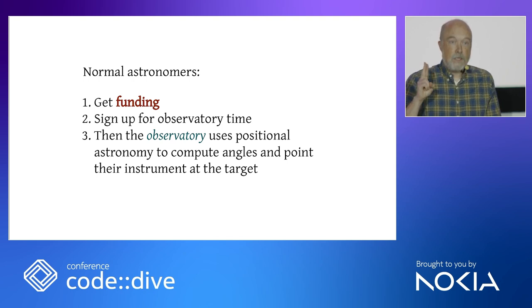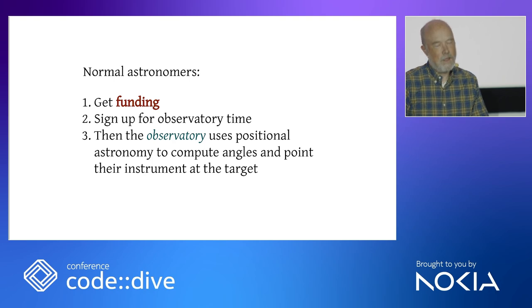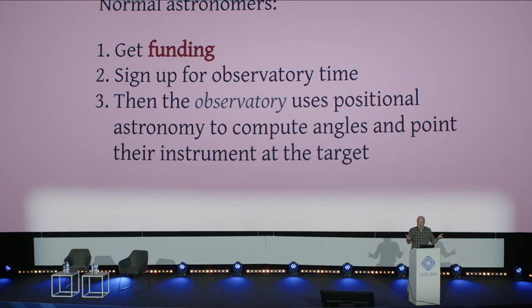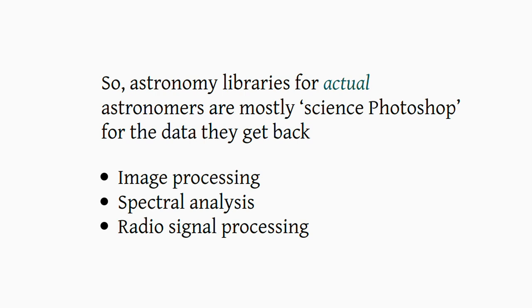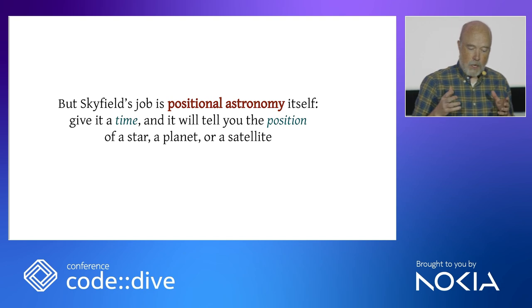Normal astronomers get funding, sign up for observatory time, and then it's usually the observatory personnel who use positional astronomy to compute angles and point their instrument at the target. Astronomy libraries for actual astronomers are mostly what you might call science Photoshop for the data they get back — image processing, spectral analysis, radio signal processing. If you've ever seen a police show where they say 'zoom in, now enhance' — that's what normal astronomers are doing. But Skyfield's job is positional astronomy itself.